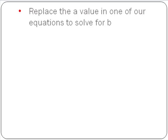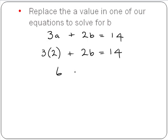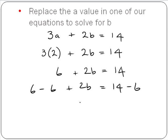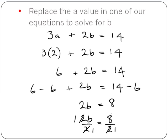We replace the a value in one of our equations to solve for b. Taking our first equation, 3a plus 2b equals 14, we replace a with 2: 3 times 2 is 6, so 6 plus 2b equals 14. We subtract 6 from both sides: 6 minus 6 is 0, so 2b equals 8. We divide both sides by 2: 2 into 8 goes 4 times, so b equals 4.